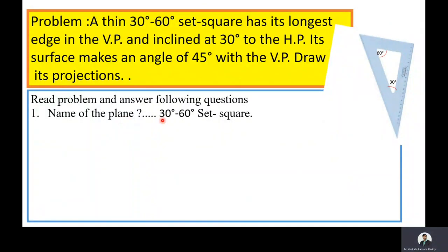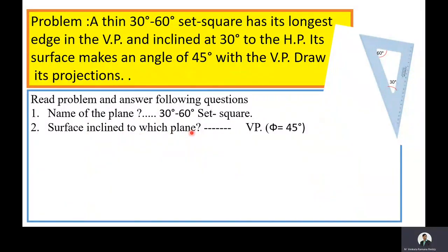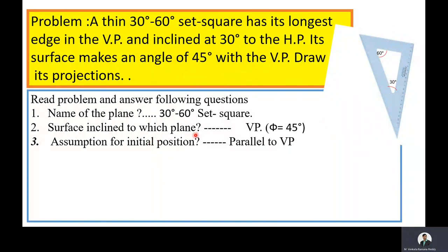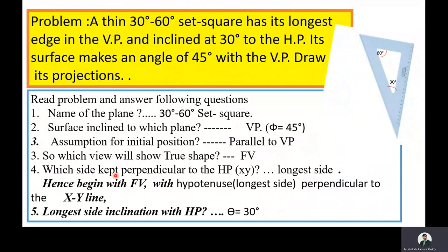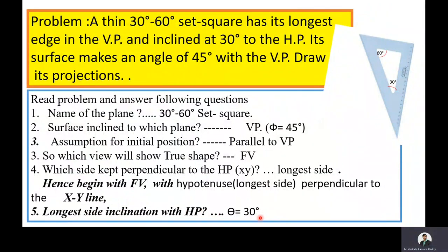What is the name of the plane? It is a 30°-60° set square. Which plane is the surface inclined to? The vertical plane, with an inclination of 45 degrees. Because the plane is inclined to the VP, we need to assume initially it is parallel to the VP. So in the front view we will get the true shape, since the plane is parallel to the VP. The longest side is kept perpendicular to the XY line. The longest side inclination with HP is 30 degrees.